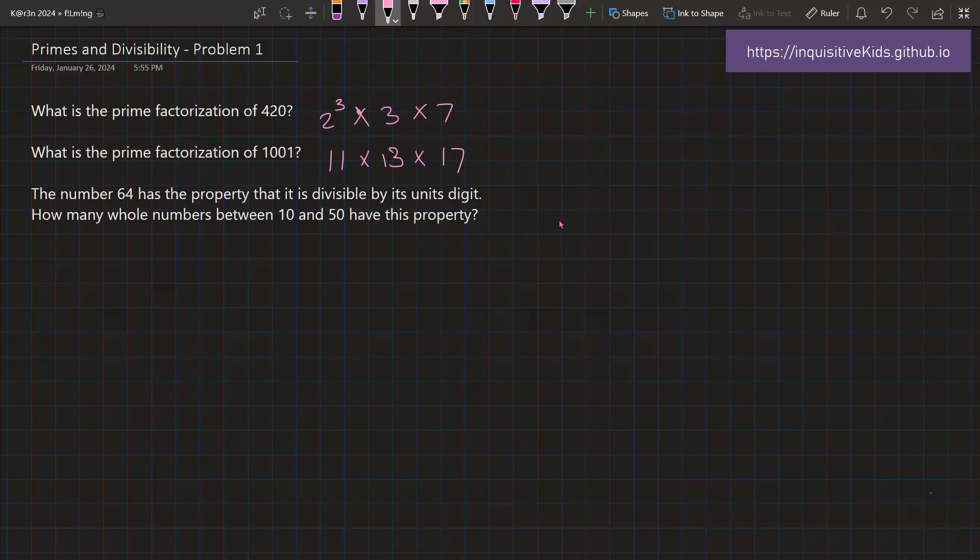Now let's move into the actual problem of this video. The number 64 has the property that it is divisible by its unit's digit, which is 4. How many whole numbers between 10 and 50 have this property?